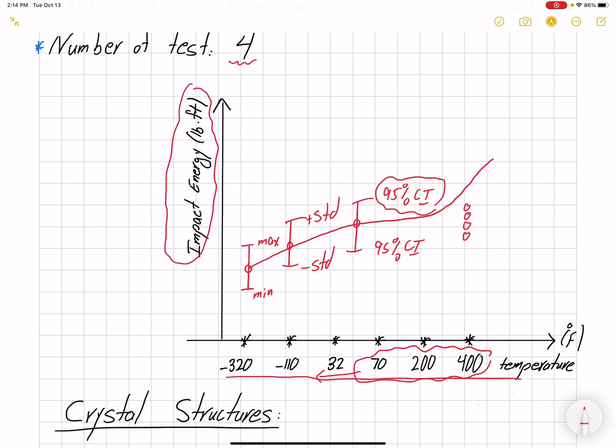We're going to find that by looking at the impact energy. If the impact energy is low at the beginning and then goes up and stays there, that region would be our transition region, and the temperature associated with that would be the brittle-ductile transition temperature.